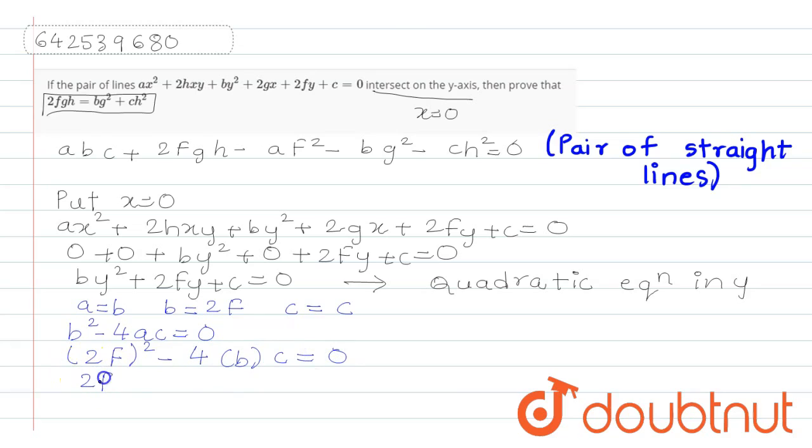This gives you 2F square minus 4BC equals 0, which is nothing but 2F square equals 4BC. When you square 2, you get 4, so here I have to write 4. This becomes 4F square and 4F square, so F square equals BC. We have got this part: F square equals BC.